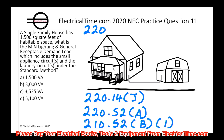If we flip to 210.52B1 in our codebook, it talks about small appliances — receptacle outlets served in the kitchen, pantry, breakfast room, dining room, or similar area of a dwelling unit. Two or more 20-amp small appliance branch circuits required by 210.11C1 shall serve all wall and floor receptacle outlets covered by 210.52A, all countertop outlets covered by 210.52C, and receptacle outlets for refrigeration equipment. Make sure that you read this in your codebook and also look at the other sections that they reference — it's really important.